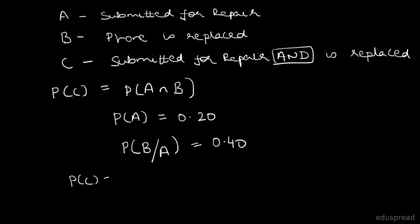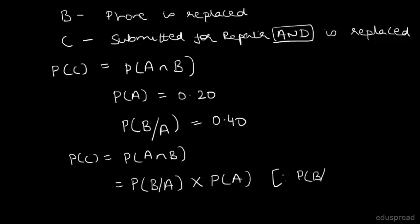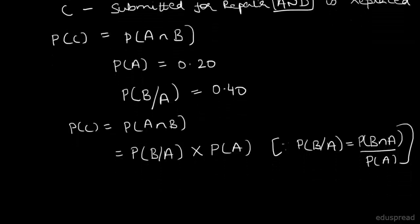We know that probability of C equals probability of A intersection B. Using the conditional probability formula, probability of B given A equals probability of B intersection A divided by probability of A. So probability of A intersection B equals probability of B given A multiplied by probability of A. We are given that this equals 0.40 and probability of A is 0.20, so this gives us 0.08.